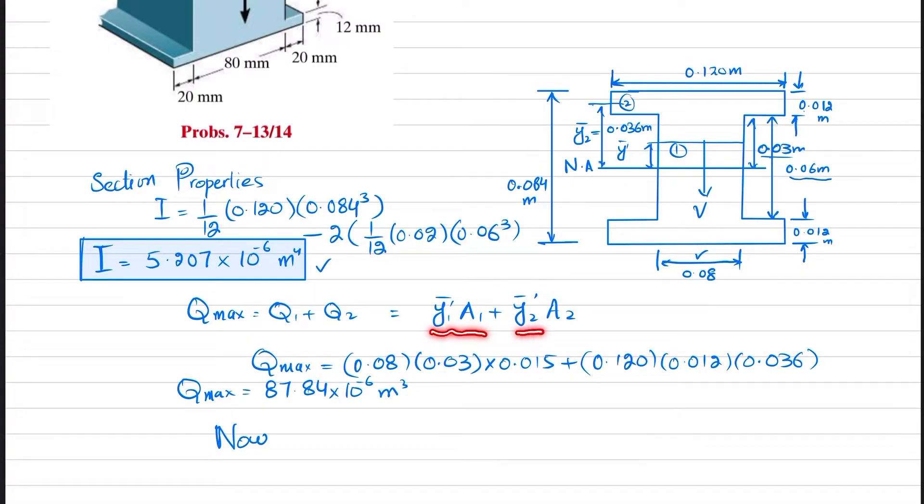Q1 is y1-dash times A1 plus y2-dash times A2. This area A1 is 0.023 multiplied by 0.08, and its distance from the neutral axis is y1, which is 0.03 divided by 2, giving 0.015. Plus, this area is 0.120 multiplied by 0.012, and its distance from the neutral axis to the centroid is y2, which is 0.006 plus 0.03. When you solve it, you get Q_max as this value.